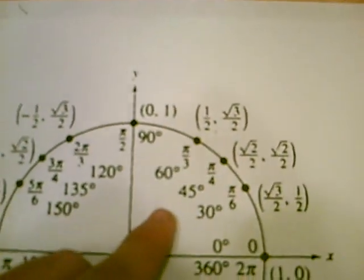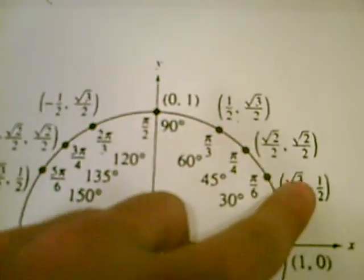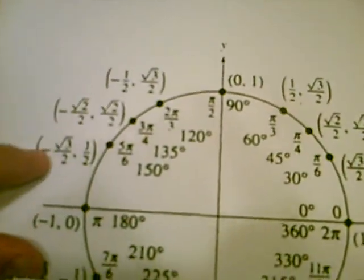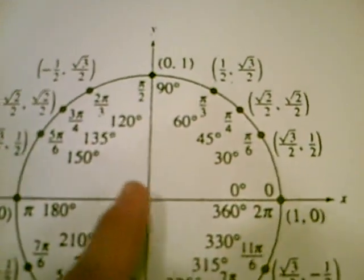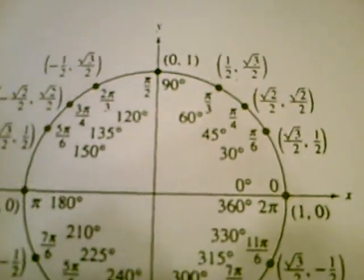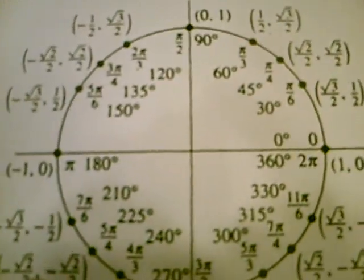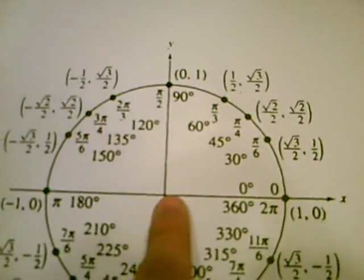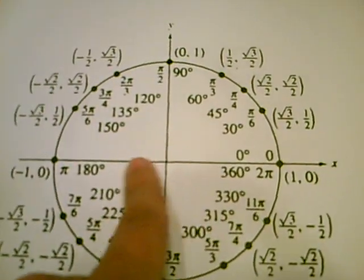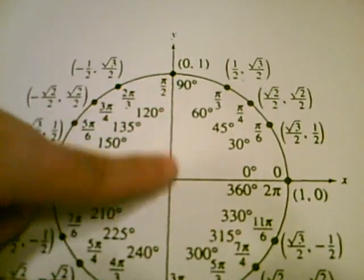Some people get confused, like they're all positive, there's a negative over here, these are negative. They don't know what to put positive and negative, but it's actually quite simple, really easy. Because you just picture it. This is the x-axis right here, and this is the y-axis.